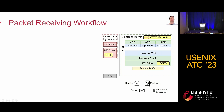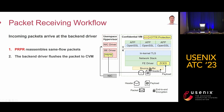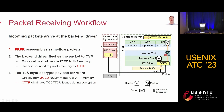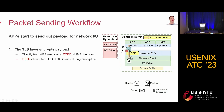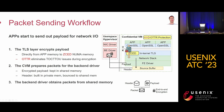Putting it all together, here is the packet receiving and sending workflow. In the Rx direction, when incoming packets arrive at the backend driver, PRPR reassembles same-flow packets into a larger one and flushes it to the CVM. The encrypted payload is flushed directly to the ZcedPneuma memory, while the plaintext header is bound to private memory by the OTTR. Finally, the TLS layer decrypts the payload directly from ZcedPneuma memory to the application's private memory. In the Tx direction, the application sends out payload; the TLS layer encrypts it from private memory to ZcedPneuma memory. The CVM then prepares packets for the backend driver, keeping the encrypted payload in shared memory while building the header in private memory and bouncing it to shared memory. Eventually, the backend driver obtains packets from shared memory.